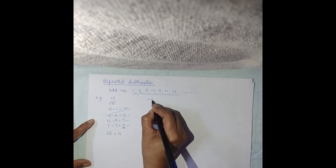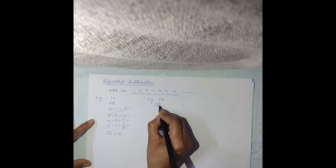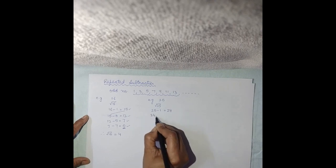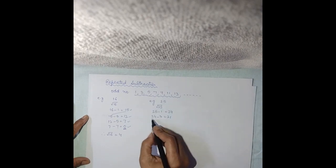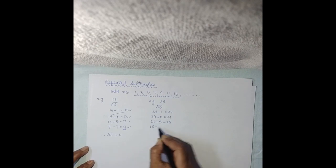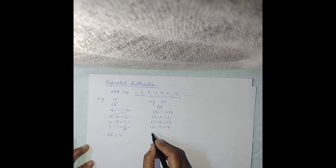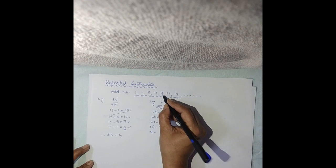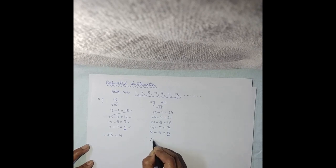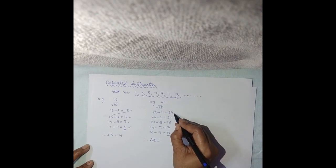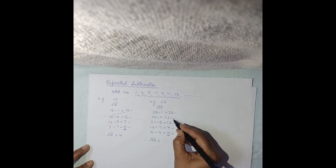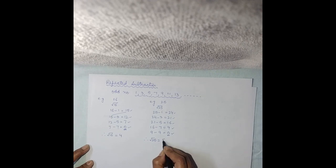Take one more example. Let it be 25. To find the Square Root of 25, follow the same procedure. 25 minus 1 gives 24. 24 minus 3 gives 21. 21 minus 5 gives 16. 16 minus 7 gives 9. And 9 minus 9 gives 0. Again you are getting 0. Count how many times you did the subtraction: 1, 2, 3, 4, and 5. So 5 times — therefore the Square Root of 25 is 5.